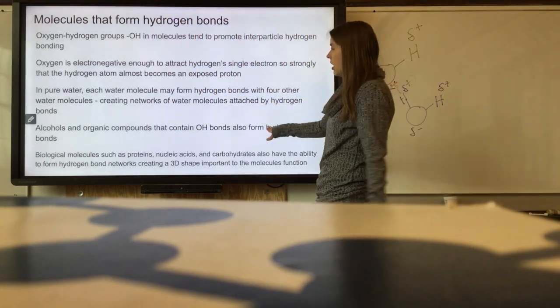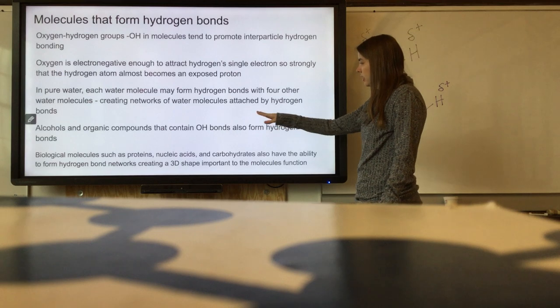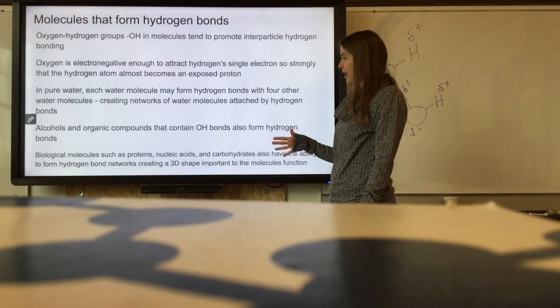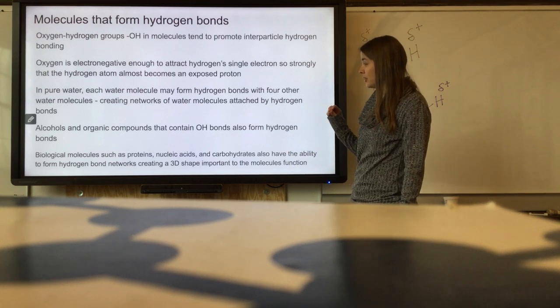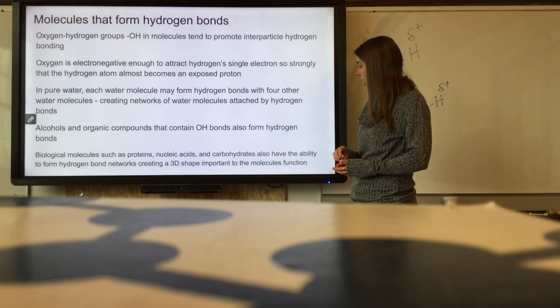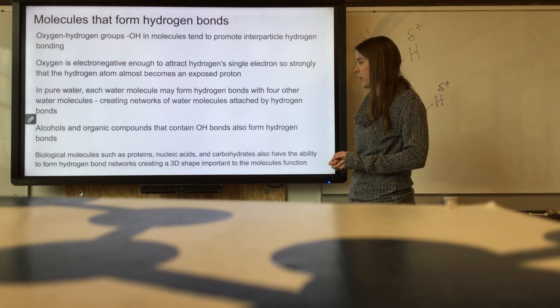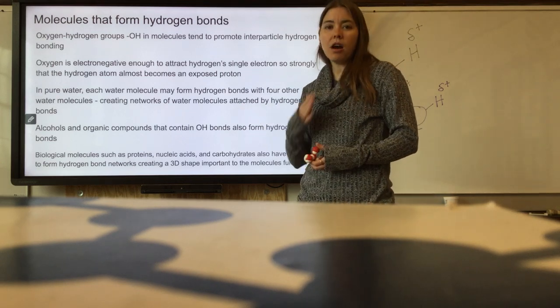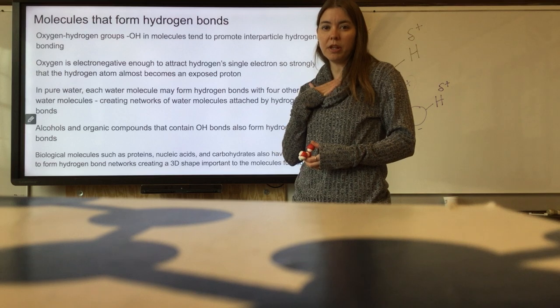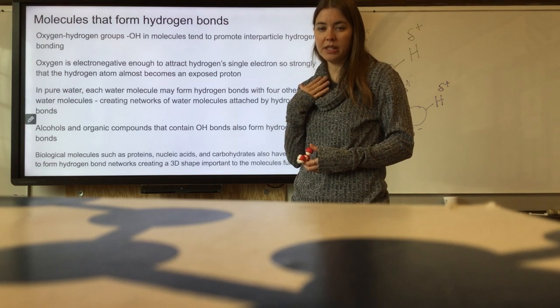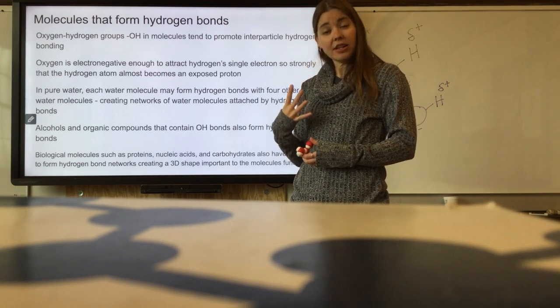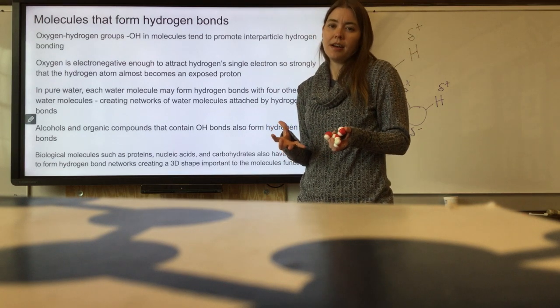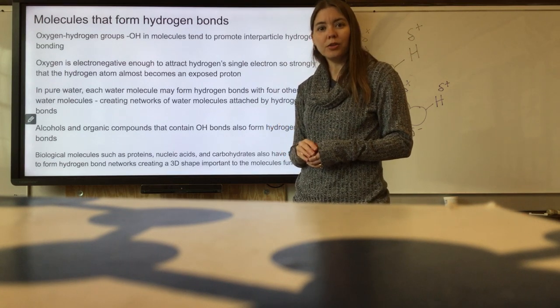Alcohols and organic compounds that contain the OH can also form hydrogen bonds. Biological molecules such as proteins, nucleic acids, and carbohydrates also have the ability to form hydrogen bond networks. Those hydrogen bonds in our molecular compounds like DNA, proteins, etc., decide the shape of that molecule, which decides what the job of that molecule is going to be.